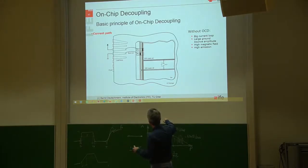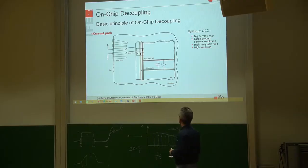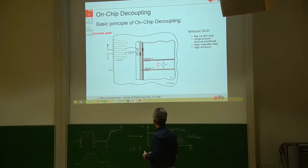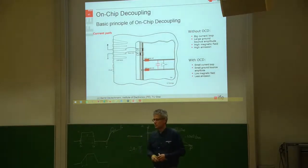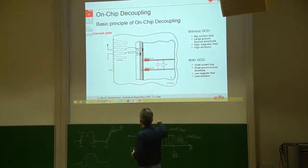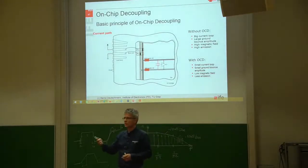By placing a decoupling capacitor next to this inverter, we can force the current to circle around in this loop here. We're using the charge stored in the capacitor so the high frequency current for the switching activity comes mainly out of the capacitor.